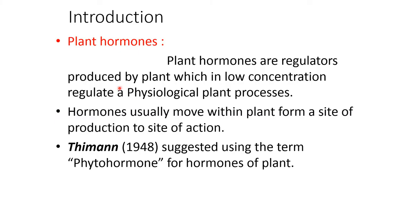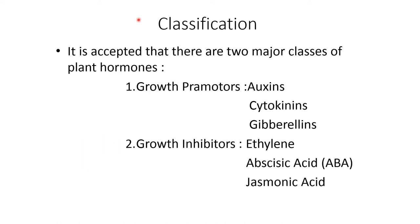Plant hormones are regulators produced by plants which, in low concentration, regulate physiological plant processes. Hormones usually move within the plant from the site of production to the site of action. Classification of phytohormones: they are classified into two major classes.